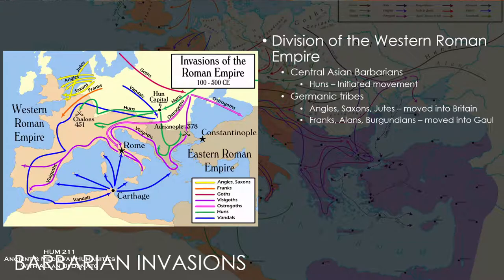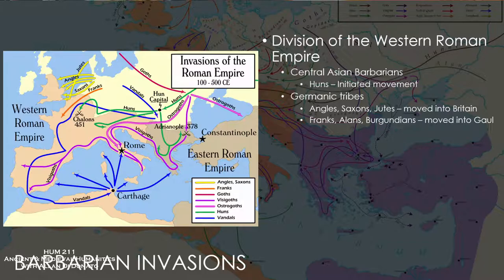The Franks actually worked a lot with the Romans — some Frankish groups worked with the Roman general Aetius who was fighting against the Huns. Some of the Franks did combat with the Huns, particularly at the Battle of Châlons in 451.